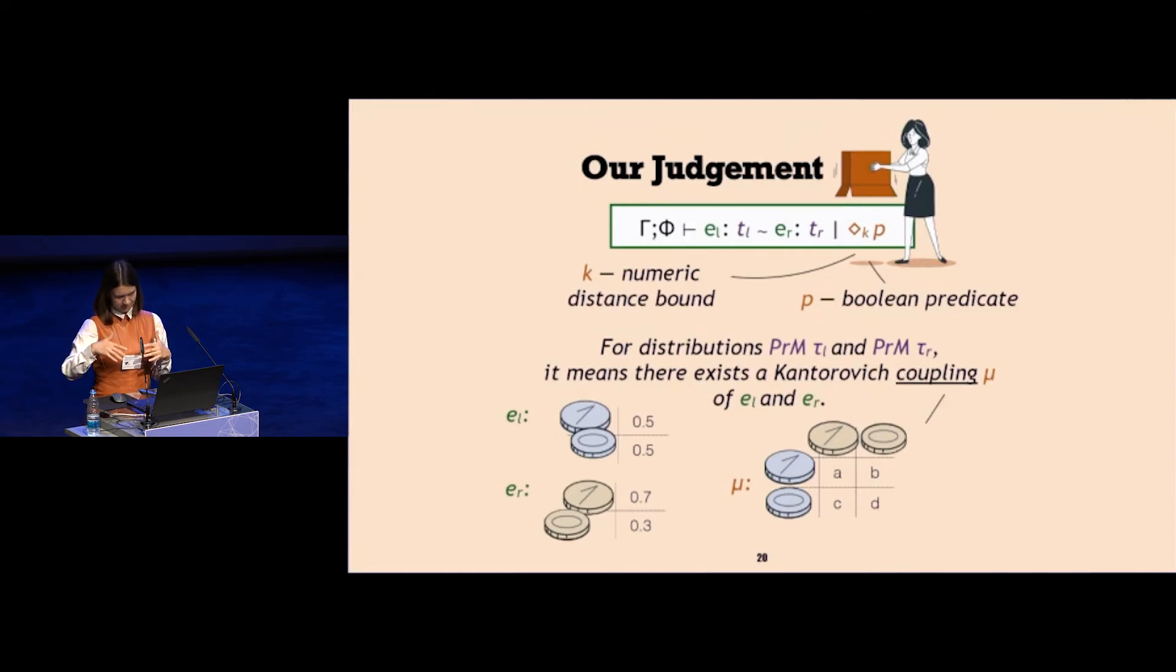Imagine our left expression was the flip the coin of a balanced silver coin, and our right expression is the coin that more frequently ends up heads up. Now the coupling will be a distribution on pairs, so we flip both coins at the same time, and we want the relation. How probable it is that one coin is zero, the other is one?